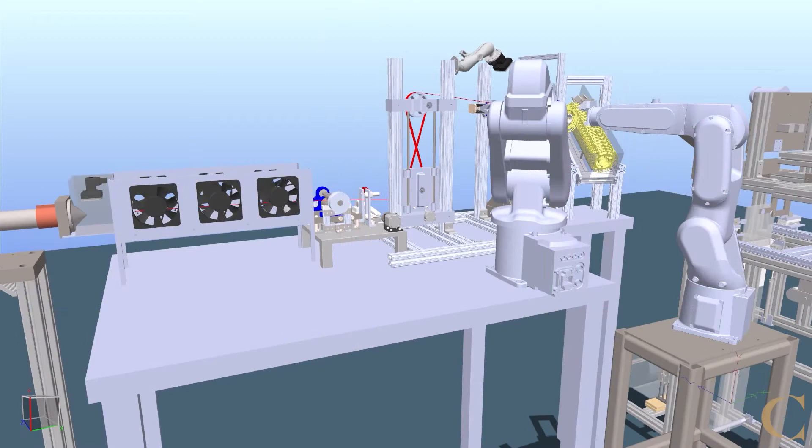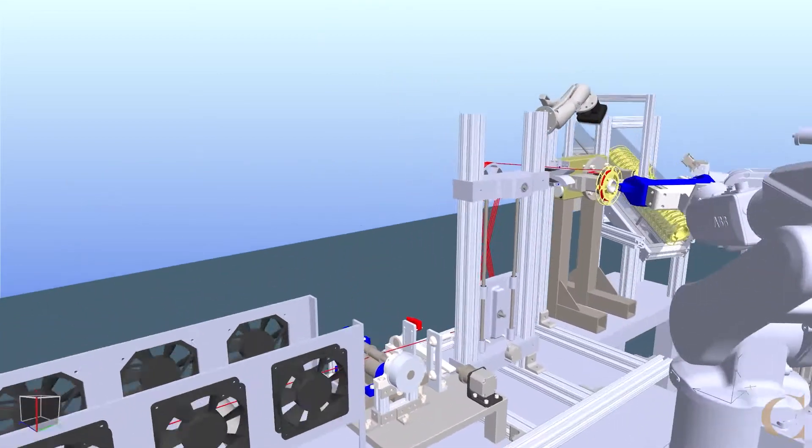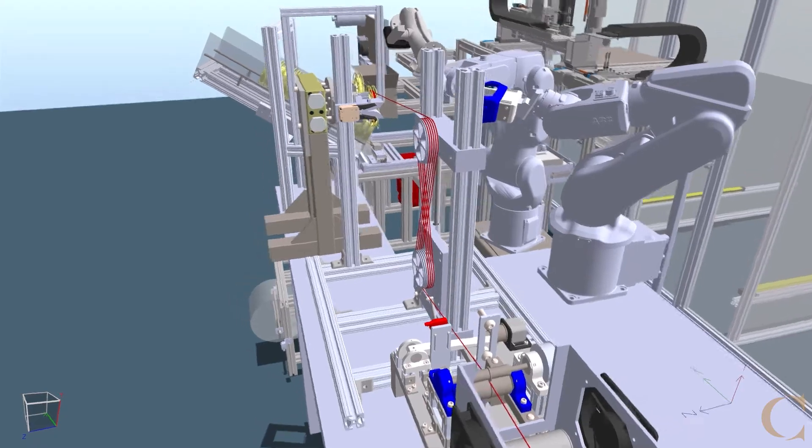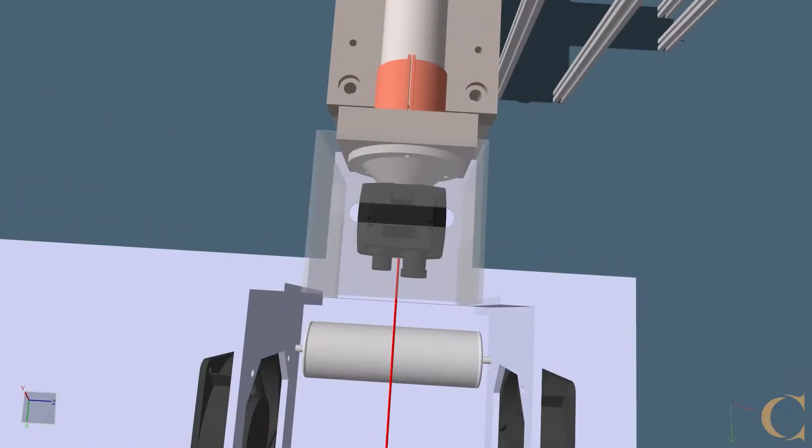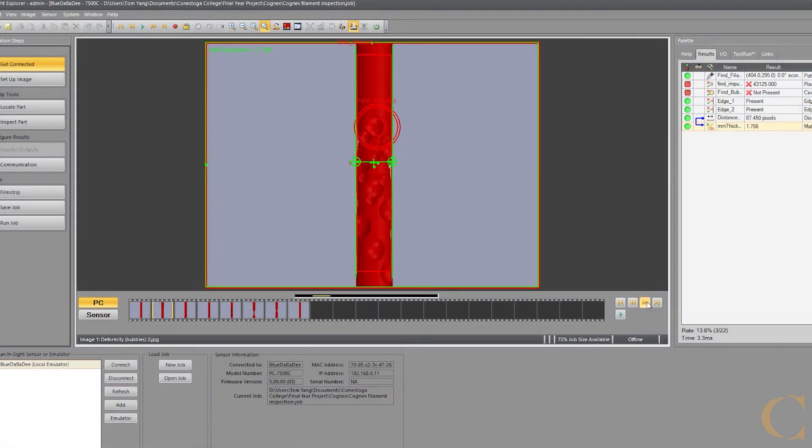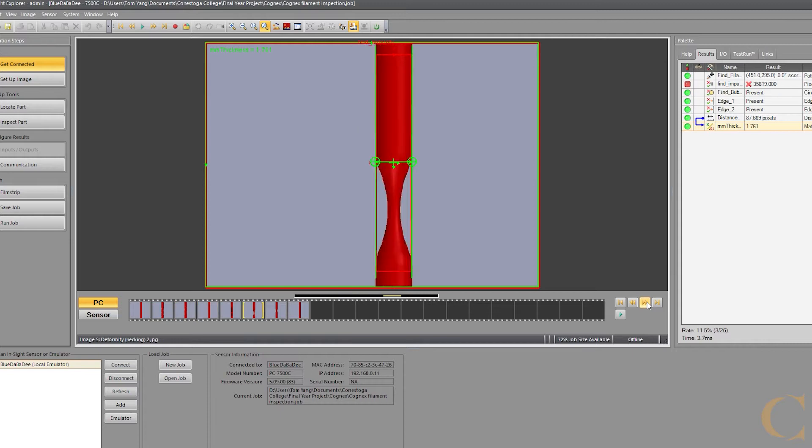After exiting the extruder, the molten filament is air-cooled through a series of fans. A vision camera is used at the beginning of the spooling station to inspect the filament for defects such as bubbling, burning, bulging, necking, and tolerancing.